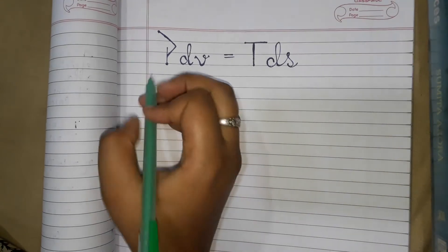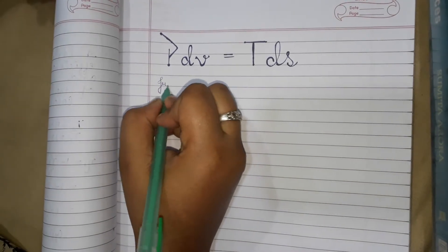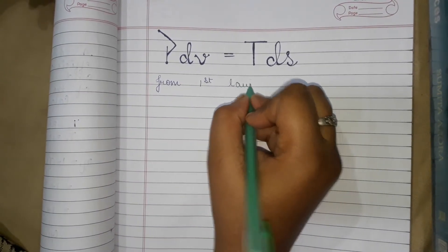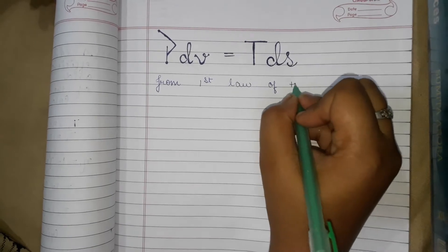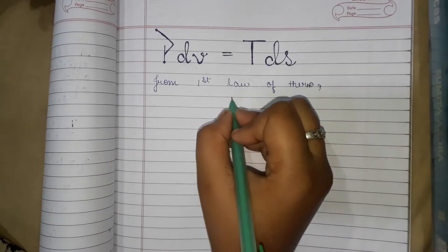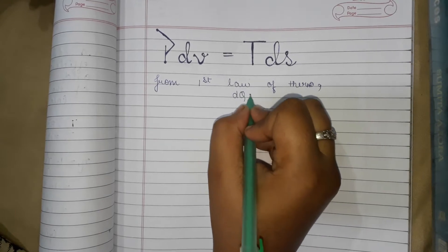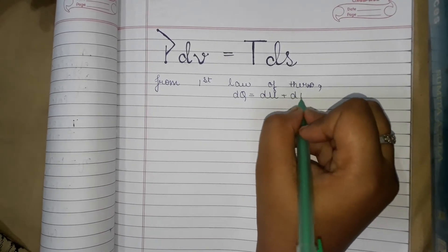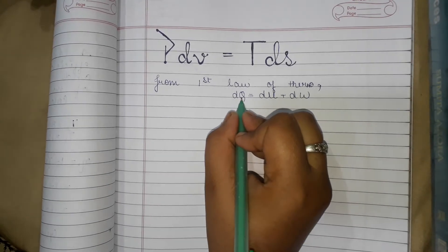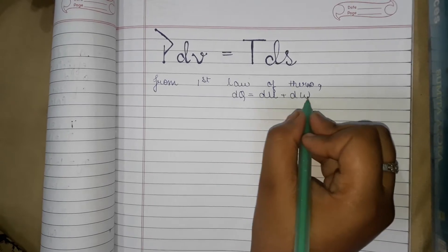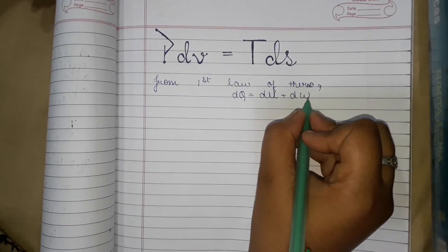So we have from the first law of thermodynamics, dq is equal to du plus dw, where q represents heat, u is internal energy and w is work done.